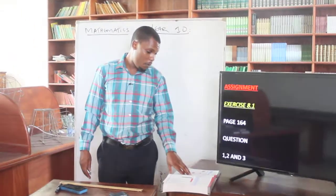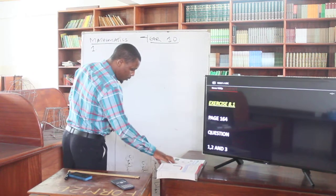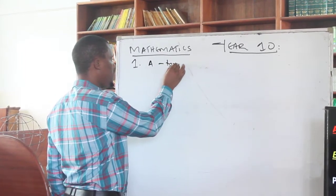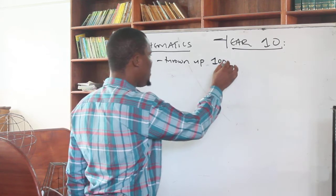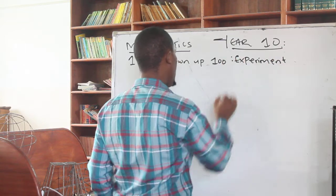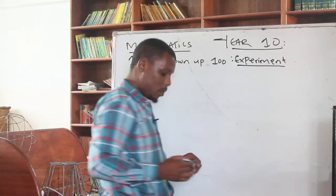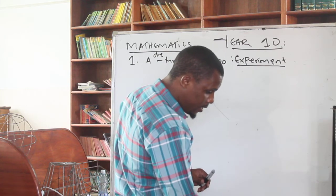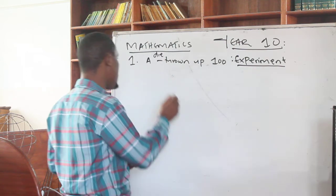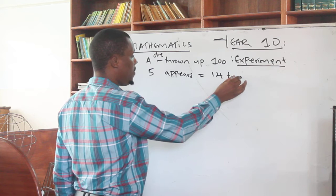The question tells us that you have a simple die — that is number one, which I'm referring to on page 164. It's telling us that you have a simple die which is drawn a hundred times. So that is the experiment — a die is drawn up a hundred times. From this experiment, what is the outcome or the observation? You are told that the number five appears 14 times. So five appears 14 times — that is the outcome for the five.